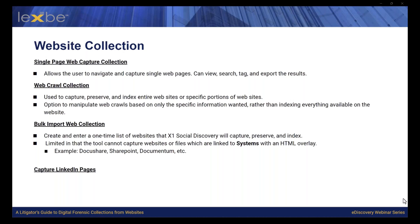A bulk import web collection consists of creating and entering a one-time list of websites for the tool to capture, preserve, and index. However, this method has one limitation: it cannot capture websites or files linked to systems within an HTML overlay. What that means is if a website has an HTML overlay, it can display additional information, have pop-ups, or have interactive elements that navigate you away from your current page — and those elements can disrupt the collection process. Examples of websites with HTML overlays include DocuShare, SharePoint, and Documental. Lastly, we are also able to capture LinkedIn pages to collect crucial details from a user's profile or a business page.